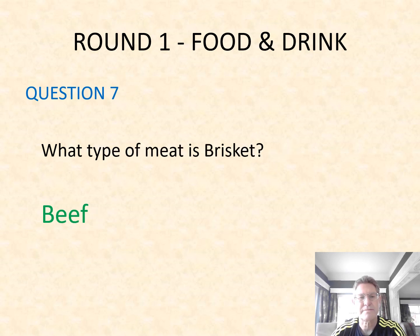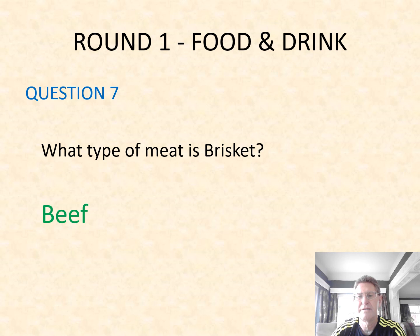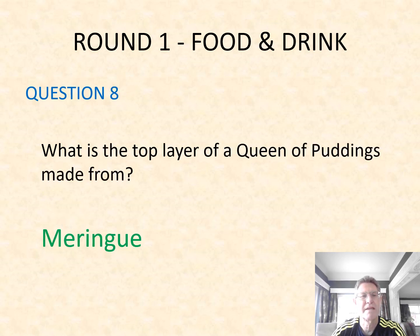Question seven: what type of meat is brisket? It's beef. Question number eight: what is the top layer of a queen of puddings made from? It's made from meringue, if you've ever had it.